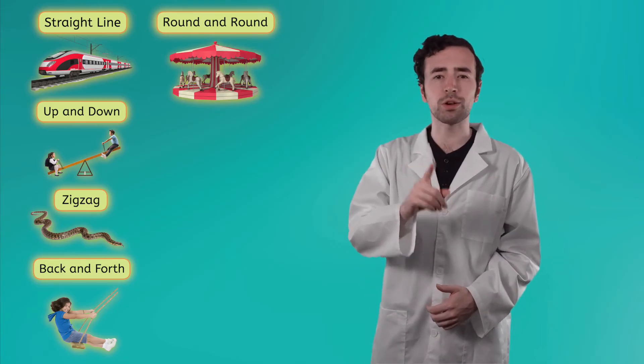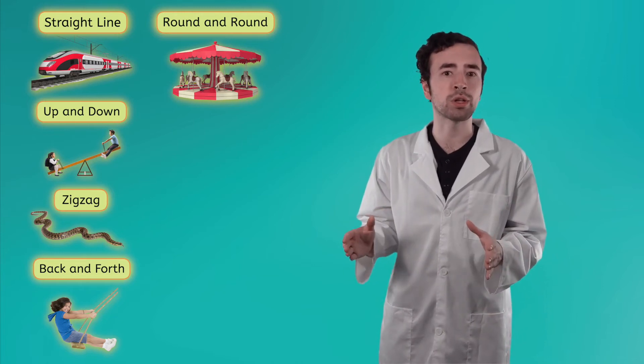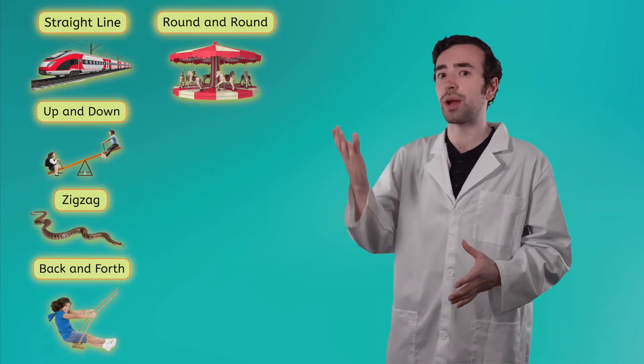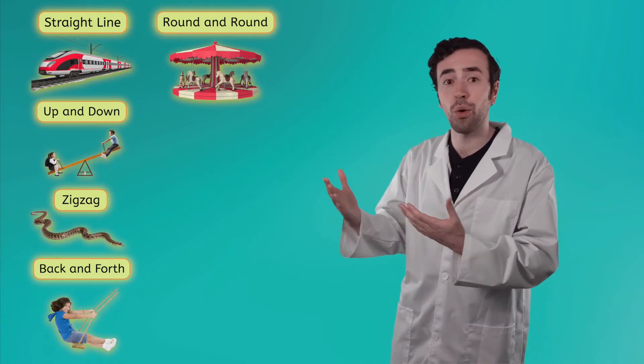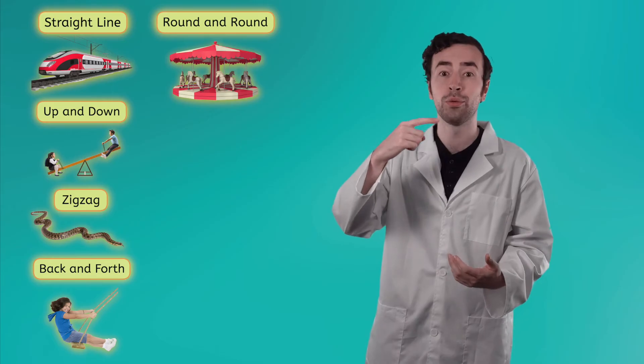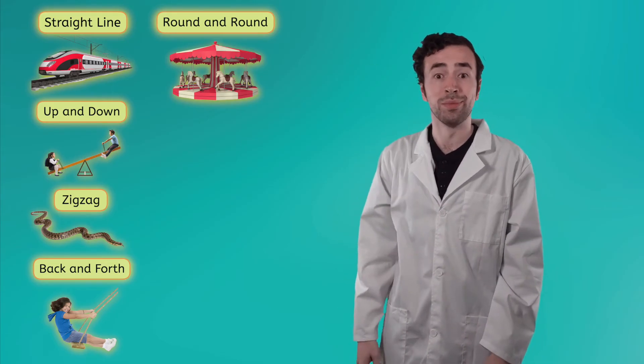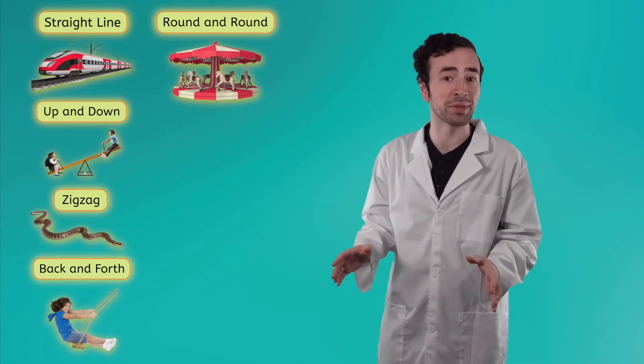Pause the video here and observe your learning environment. Look around carefully for anything in motion. Maybe you see a tree branch outside moving back and forth in the breeze. Maybe you see the hand of a clock going round and round. Or maybe you see a mosquito in the air flying in a zigzag motion. Motion is all around us.